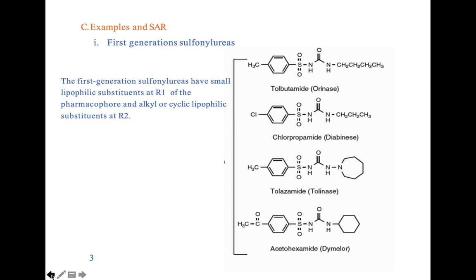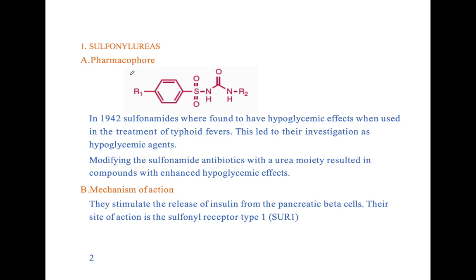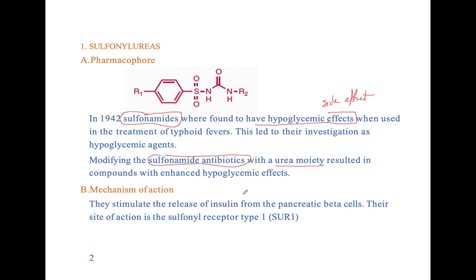The first group of drugs we'll deal with are the sulfonylureas. Sulfonylureas were discovered as a result of an effort to develop antibiotics. Sulfonamide antibiotics were being developed and were found to have a hypoglycemic effect as a side effect. In continuing the investigation, the sulfonamide antibiotics were modified with a urea moiety, which resulted in compounds with enhanced hypoglycemic effect. These sulfonylureas work by stimulating the release of insulin from the pancreatic beta cells, and the site of action is sulfonylurea receptor 1.